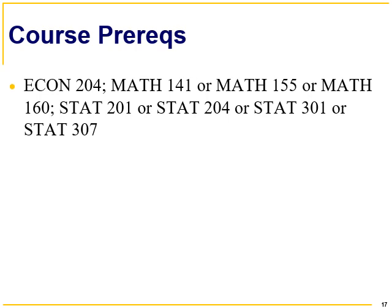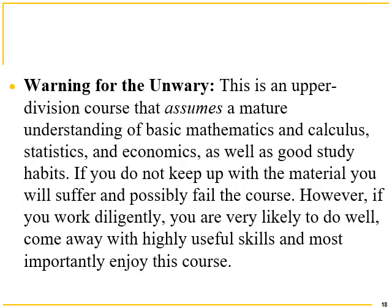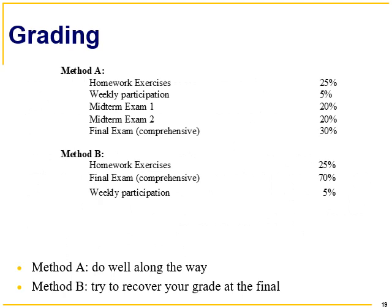Here are the course prerequisites, also listed on the syllabus. A warning for the unwary: you should treat this like a math course. If you do not keep up, you will fall behind — it's not easy to pick up later because each module builds on the previous one; they're not independent. Grading: there are two methods, A and B. Method A is for students that do well along the way — homework exercises are 25%, weekly participation for online discussions, two midterm exams, and a final. Method B is for people that did not do well along the way; you can drop your midterms and hopefully make up your grade on the final.